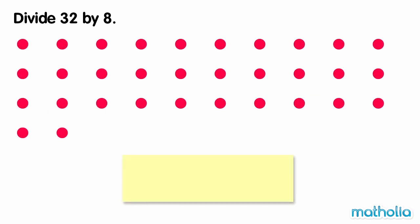Divide 32 by 8. There are 32 dots. To divide the dots, let's make groups of 8 and then count the total number of groups.